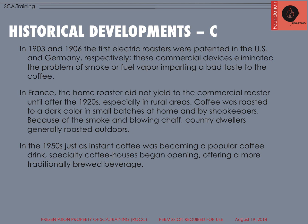In the early 1900s, the first electric roasters were patented in the US and Germany. These helped eliminate the problems of smoke and fuel vapors that would often get trapped into the roasting compartments and impart a bad taste. Not just electric — fans were introduced to drive out those fumes and smoke. In France, the home roaster didn't yield to the commercial roaster until the 1920s, especially in rural areas. Coffee was roasted in a very dark color — we've heard of French roast — in small batches at home or by shopkeepers. Because of smoke and the blowing of chaff, many country dwellers typically roasted outdoors.